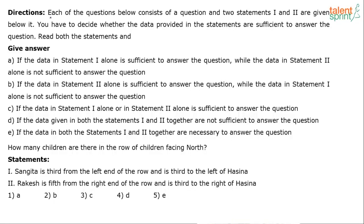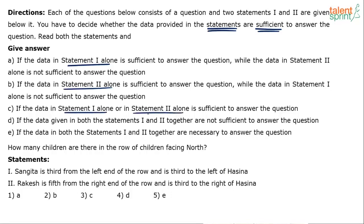This question is from data sufficiency. Each question consists of a question and two statements — one and two. You have to decide whether the data provided in the statements is sufficient to answer the question. The only thing to check is whether you are finding statements which are sufficient or not sufficient. Options given: only one alone is sufficient, only two alone is sufficient, either one or two alone is sufficient, both are not sufficient, or both are necessary.